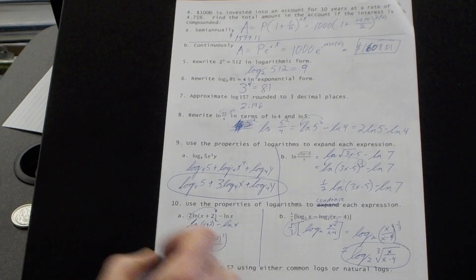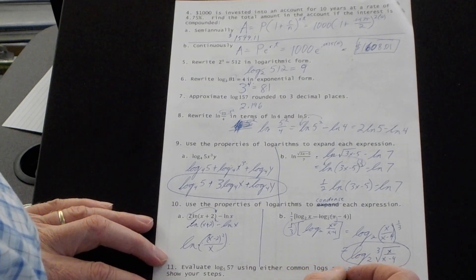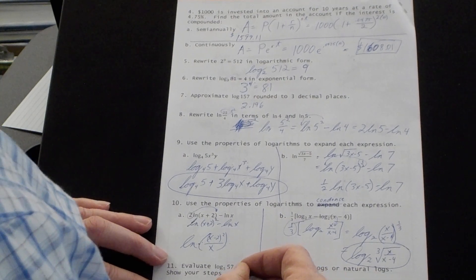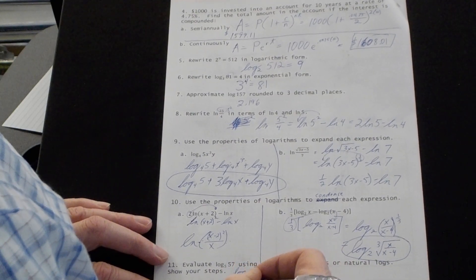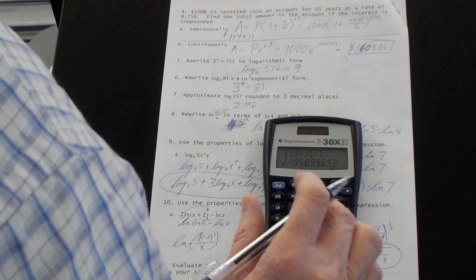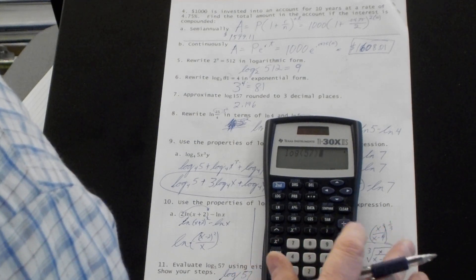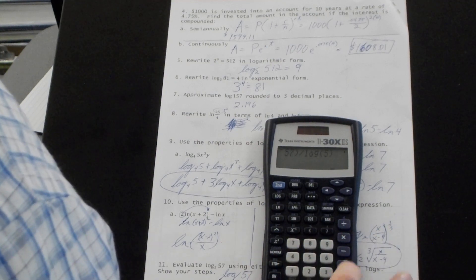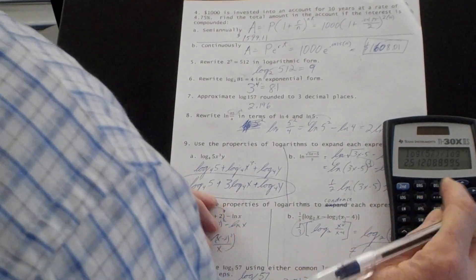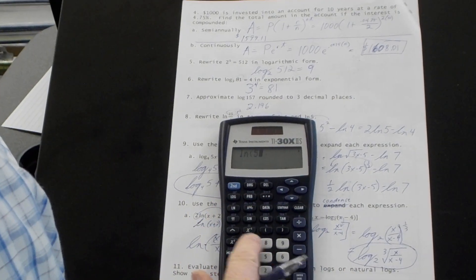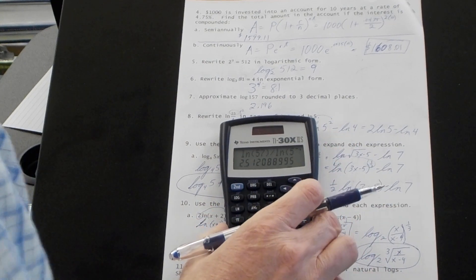Number 11, evaluate the log base 5 of 57 using either common logs, log base 10, or natural logs, log base E. Let's do log base 5 of 57 is the log of 57 over the log of 5. This doesn't have a change of base, so I'm going to use log. 57 divided by log of 5 equals 2.512. Now, what if I'd have chosen natural log? Natural log of 57 divided by natural log of 5 gives me 2.512, just the same.